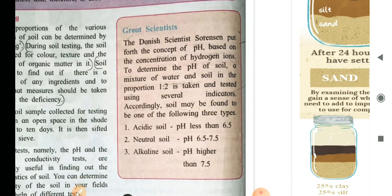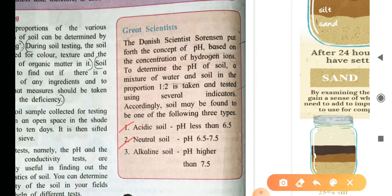Now, let us see which were the greatest scientists. The Danish scientist Sorensen put forth the concept of pH which is very useful for us in our day-to-day life based on the concentration of hydrogen ions. How will you define pH? pH is concentration of hydrogen ions or H ions. You can underline it. To determine the pH of soil, a mixture of water and soil in a proportion of 1 is to 2 is taken and tested. 1 is to 2 means one part of water and two parts of soil is tested using several indicators. Accordingly, soil may be found to be any one of the following three types. Acidic soil pH less than 6.5. Neutral soil pH 6.5 to 7.5. Alkaline soil pH higher than 7.5.